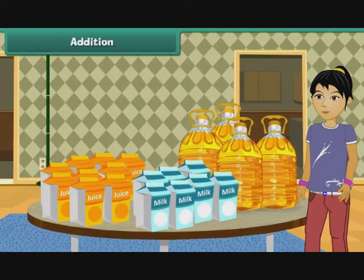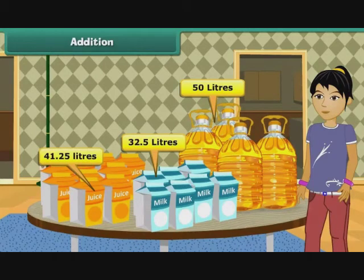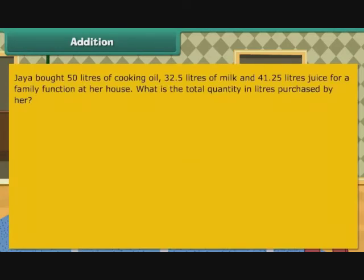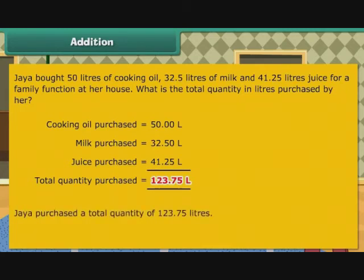Addition. Jaya bought 50 litres of cooking oil, 32.5 litres of milk, and 41.25 litres of juice for a family function at her house. What is the total quantity in litres purchased by her? Cooking oil is 50 litres, milk is 32.50 litres, and juice is 41.25 litres. We add the three to get the total quantity purchased as 123.75 litres. Jaya purchased a total quantity of 123.75 litres.